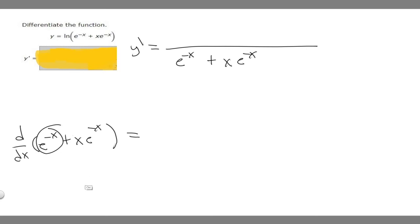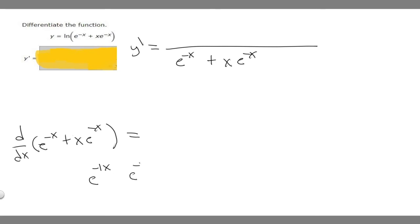What is the derivative of e to the minus x? This is e to the minus 1x, so we use the chain rule. The derivative of the outside is e to the minus x, and we multiply by the derivative of the inside, which is minus 1. So it just becomes minus e to the minus x.